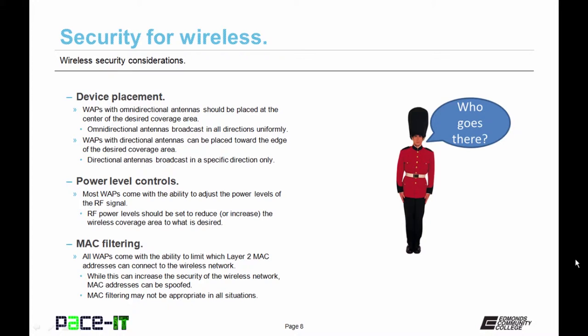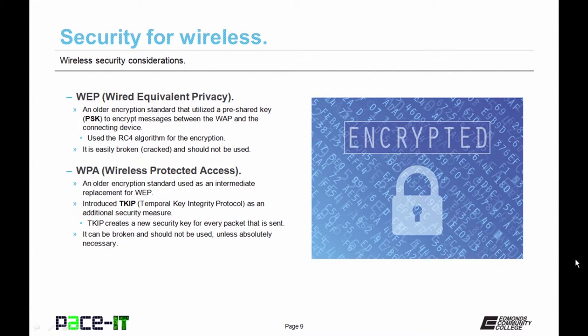All WAPs come with the ability to limit which Layer 2 MAC addresses can connect to the wireless network. While this can increase security, MAC addresses can be spoofed by an attacker. Additionally, MAC filtering may not be appropriate in all situations, especially if there are many wireless devices that come and go from the network. In that case, MAC filtering is not the best option — a better option would be to enable encryption.